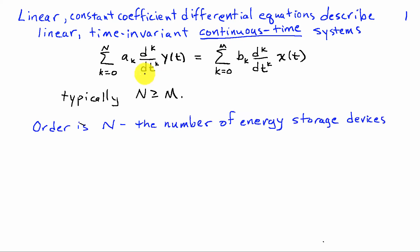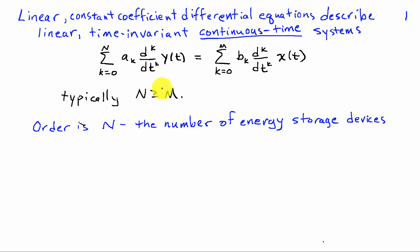The general form is to write the differential equation as a weighted sum of derivatives of the output y(t) being equal to a weighted sum of weights b_k times the k-th derivative of the input x(t). For the types of physical systems that arise in the study of signals and systems and signal processing, the order N on the left-hand side is greater than or equal to the order of derivative on the right-hand side, capital M. We simply describe the order of the system as capital N.